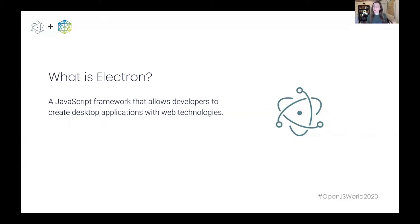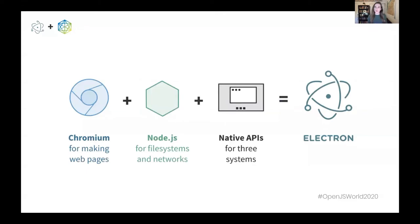Some of you may be familiar with Electron already, and some of you may even develop in Electron already. But for those of you who aren't familiar with who we are, Electron is a JavaScript framework for creating desktop applications with web technologies. Electron is ultimately a combination of three major sub-dependencies. The first is Chromium, which gives us everything we need to render HTML, JavaScript, and CSS. The second is Node and Node's V8 runtime, which many of you in the audience are quite familiar with. And then we have a layer of C++ and Objective-C that implements the APIs you as a developer need to build a native application — for example, if you want your Electron app to interact with a native window object, or if you want it to send native notifications.